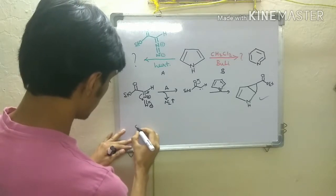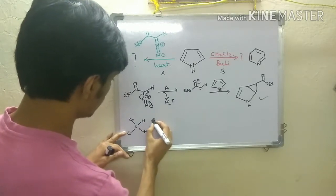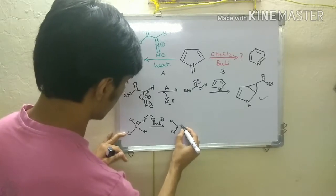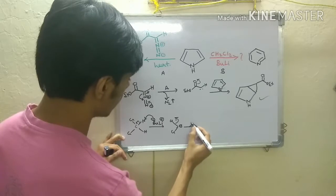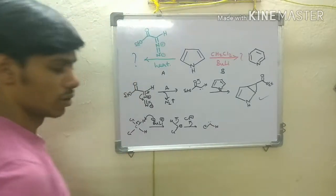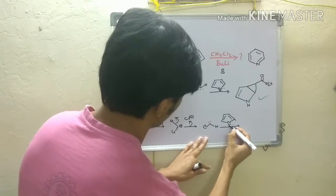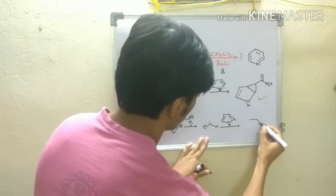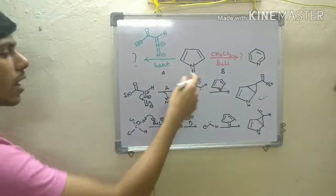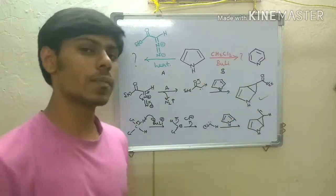In condition B, you have dichloromethane (CH2Cl2), and when butyl lithium is added, it abstracts a proton to give a carbanion. Then a chlorine can be expelled to give a dichlorocarbene. When you add pyrrole, it again inserts into the double bond. Both carbenes are electrophilic — in condition B, due to the -I effect of chlorine — and up to this insertion step, both reactions are the same.